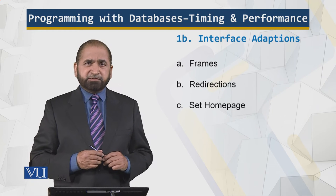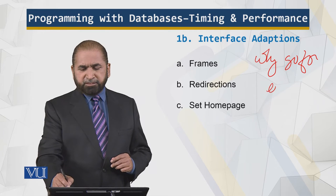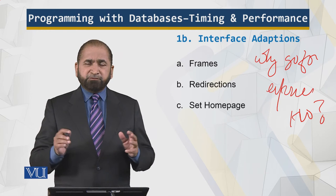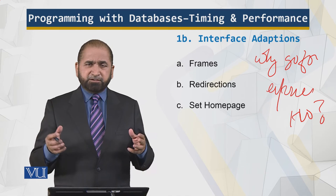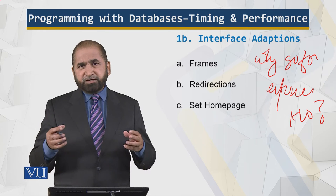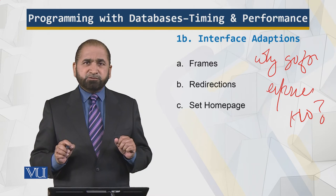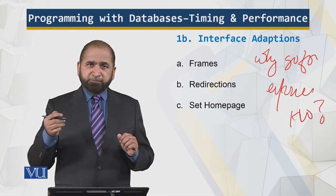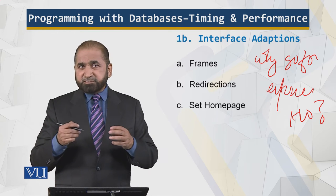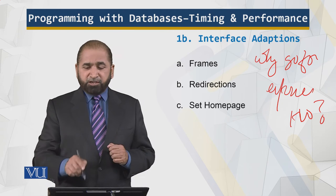Interface adaptations — why go for expensive hardware? You can use frames. We have a frame in which data is coming from a database and dynamically generated, with a certain static header also present. While the dynamic page is being generated, that static header is displayed. While the user is reading that static header, the dynamic page generation completes within the frame — without using expensive hardware.